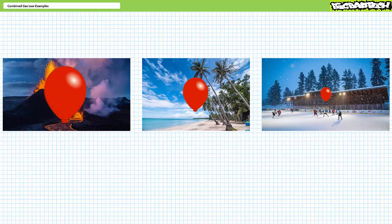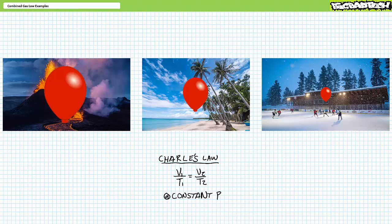Undoubtedly, the balloon in the volcano will be larger than the one on the beach, and much larger than the one in the hockey rink. Importantly, each balloon still contains one standard cubic foot of air. The standard cubic foot of air simply occupies more or less volume at different temperature conditions. This perfectly illustrates Charles' law: given constant pressure, V1 divided by T1 equals V2 divided by T2, where the subscripts mean initial and final states. Given three known properties, one can solve for the fourth unknown.